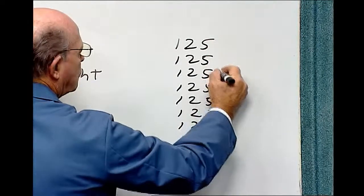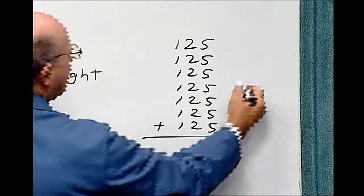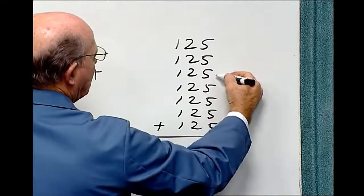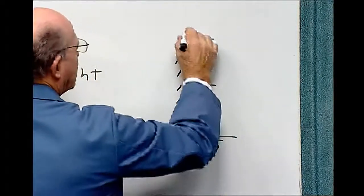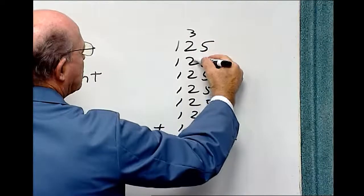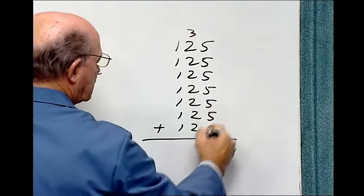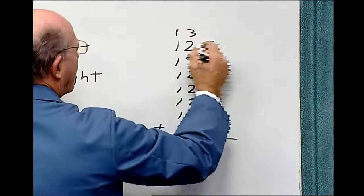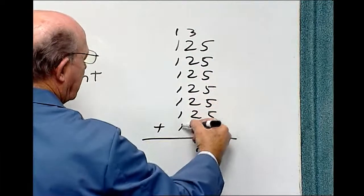[Writing $125 seven times] It's 1, 2, 3, 4, 5, 6, 7. So let's do the math. 5, 10, 15, 20, 25, 30, 35. 3 plus 2 is 5, plus 2 is 7, 9, 11, 13, 15, 17. 1, 2, 3, 4, 5, 6, 7, 8.